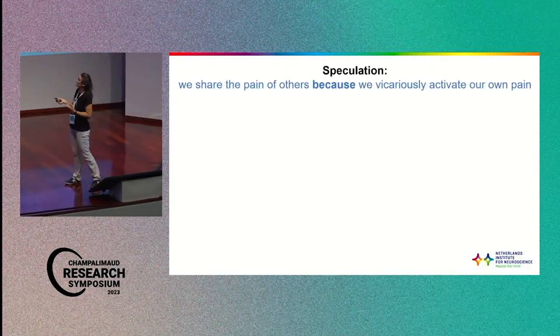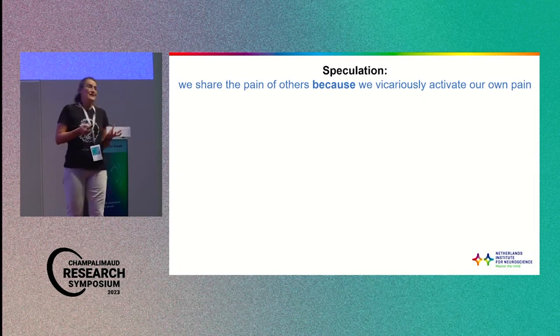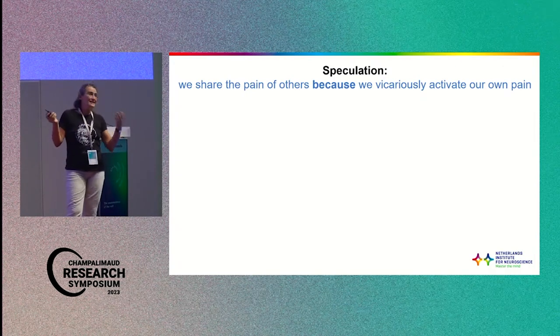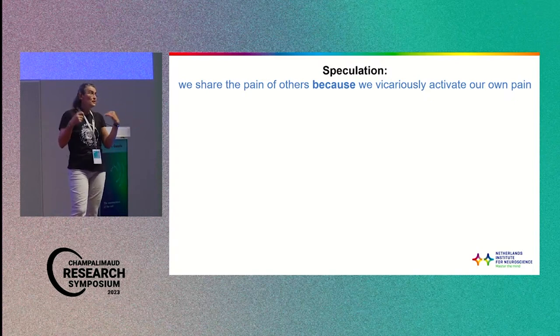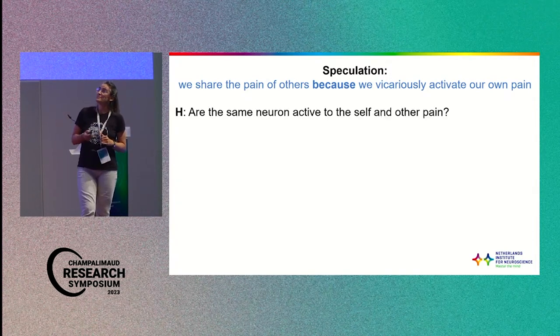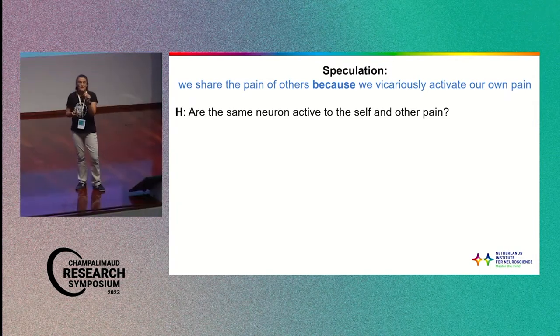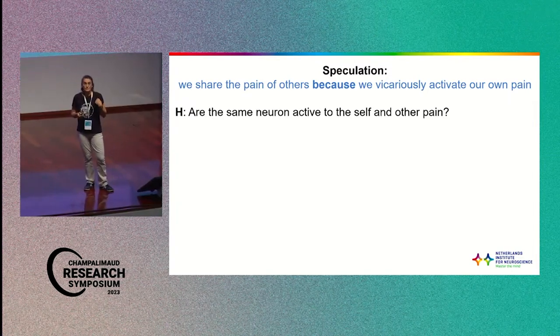So with this data you would be very tempted to make a speculation. And this speculation is very simple: we share the pain of the other because we vicariously activate our own. But that's not exactly what I've shown you, right? But we can make now a bit more precise hypothesis. Are the same neurons also within the insula responding not just to the pain of the other but also to the self?